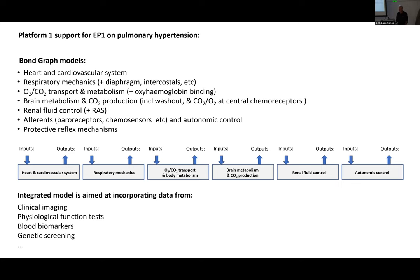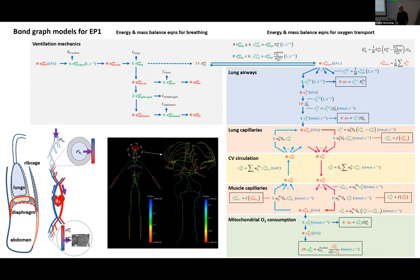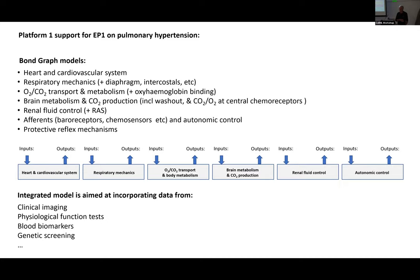When you have information around a patient, you typically have chemical imaging — MRI, CT, PET scans — physiological function tests such as lung function and cardiac tests, blood biomarkers giving information about the disease basis, and genetic screening.